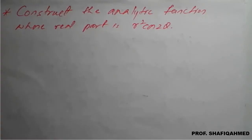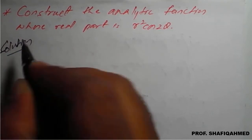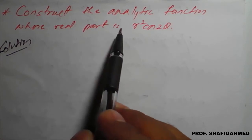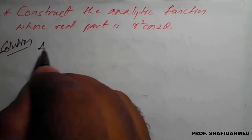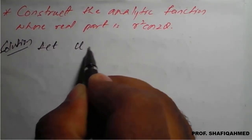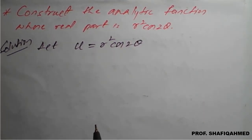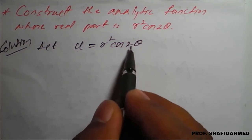Hello everyone. In this lecture we will see a construction of an analytic function. The problem is: construct the analytic function whose real part is r² cos(2θ). So the real part means let u = r² cos(2θ). We consider u as the real part and v as the imaginary part. The given function is in terms of polar coordinates, so be careful.